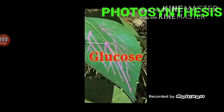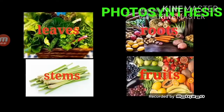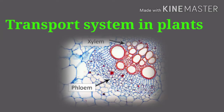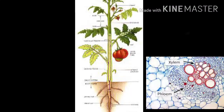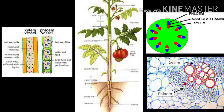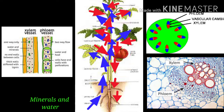Glucose is transported to various parts of the plant for growth and development, and excessive food produced is stored in various parts of plants like leaves, stems, roots, and fruits. The transport system of plants consists of xylem and phloem. The xylem transports minerals and water from the root to all aerial parts of the plant. The phloem transports food — that is, glucose — from the leaves to other parts of the plant where it is either consumed or stored.